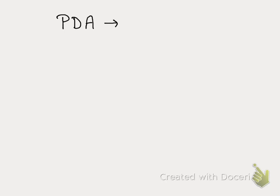In this lecture we are going to do the second part of our proof, which shows us that given two pushdown automata we can convert it into an equivalent context-free grammar. There is just one idea which is at the heart of this entire proof — if you understand that idea, then everything is simplified.